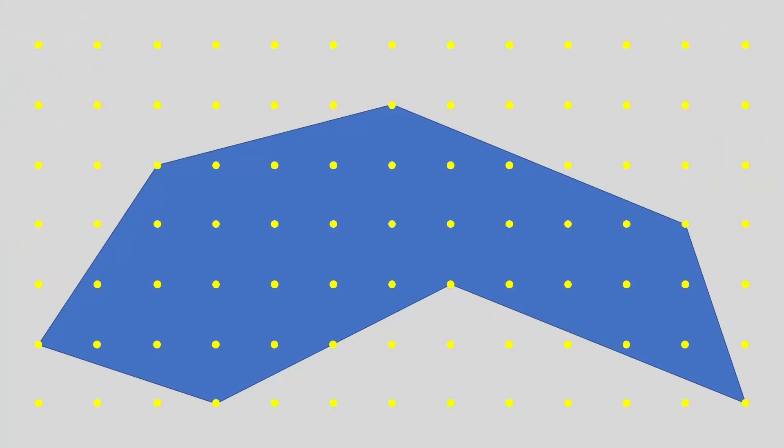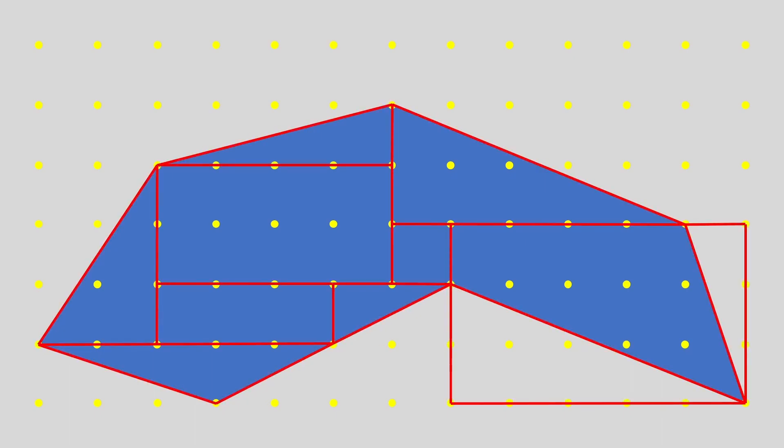The first method involves breaking this object down into simpler, more recognizable shapes whose areas we can easily calculate. Notice that we've decomposed the polygon into a bunch of rectangles and triangles. Using the spacing distance of one unit between the lattice points, we can get the lengths and widths for all the rectangles.